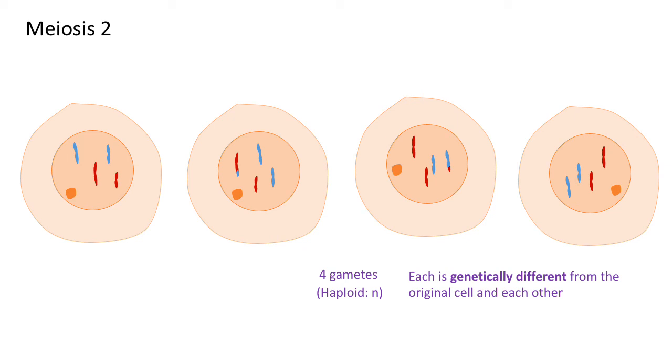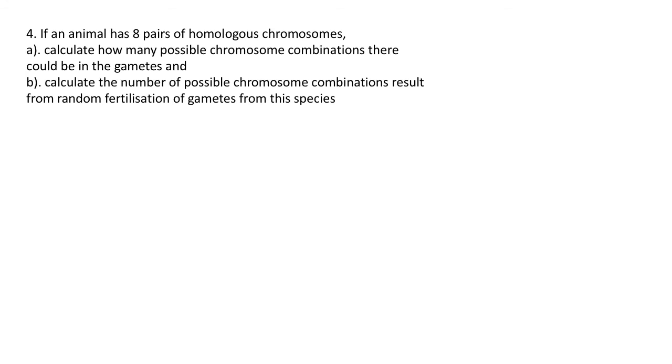That answers question three. Within those animations there were the key points you should have recognized. Let's move on to question four. For part a, the calculation for chromosome combinations in gametes is 2 to the power n, where n is the number of pairs of homologous chromosomes. In our example, we said there are eight, so this would give 256.